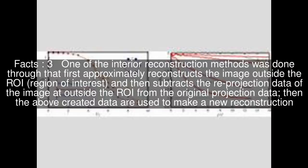One of the interior reconstruction methods was done through that first approximately reconstructs the image outside the ROI (region of interest), and then subtracts the reprojection data of the image at outside the ROI from the original projection data, then the above created data are used to make a new reconstruction.